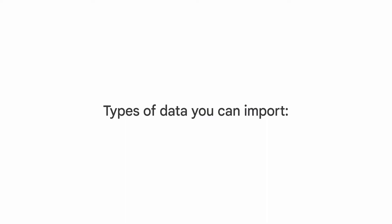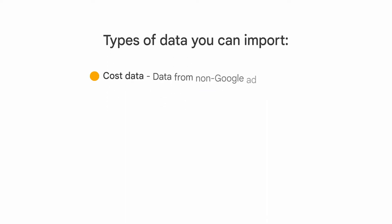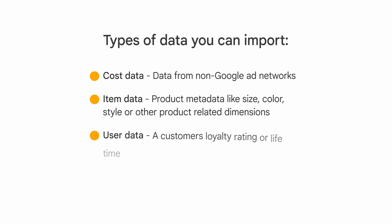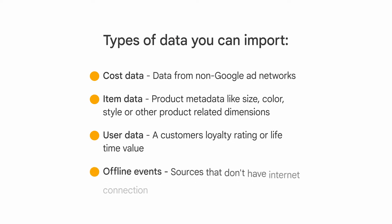Let's look at the types of data you can import. Cost data, which would be data from non-Google ad networks, such as clicks, cost, and impression data. Item data, or product metadata, like size, color, style, or other product-related dimensions. User data, such as loyalty rating or lifetime customer value, that you can use to create segments and remarketing lists. And offline events from sources that don't have an internet connection or that otherwise don't support real-time event collection.